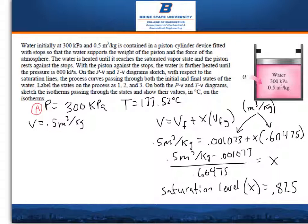The water is heated until it reaches the saturated vapor state and the piston rests against the stops. With the piston against the stops, the water is further heated until the pressure is 600 kilopascals.